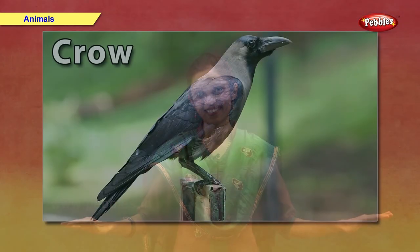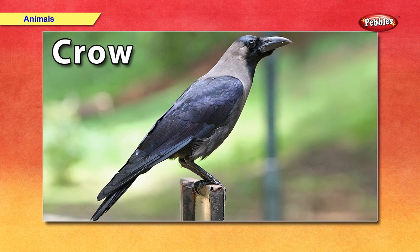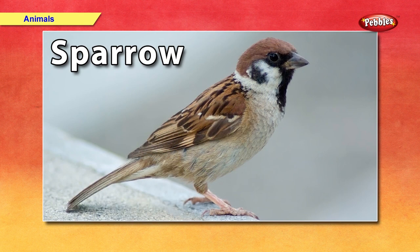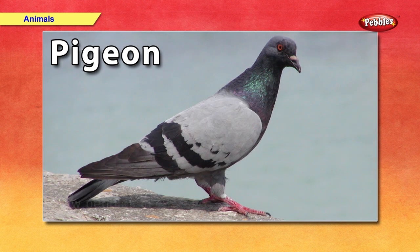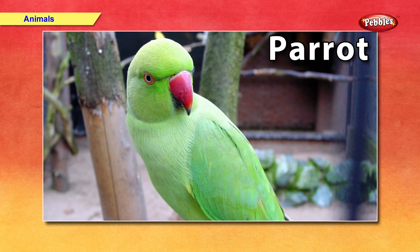Now let us take a look at air animals in detail. Crow — a crow is black in colour. Sparrow — a sparrow eats small food grains. Pigeon — a pigeon is grey in colour. Parrot — a parrot is green in colour. It eats chillies.